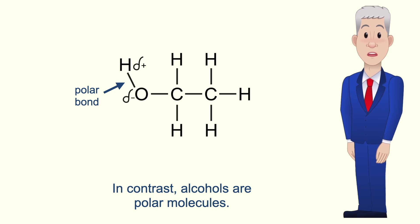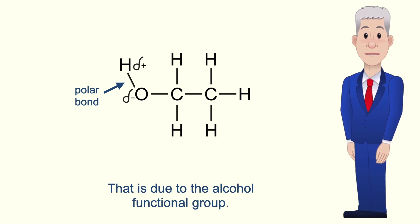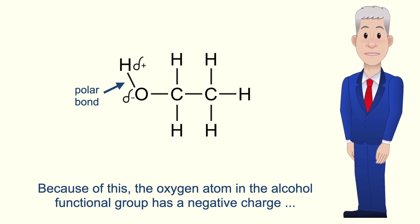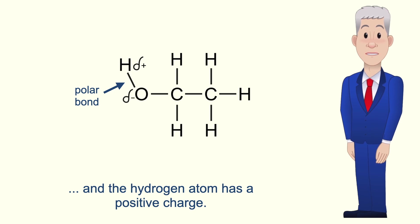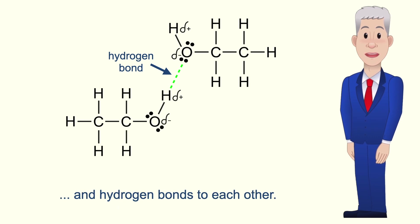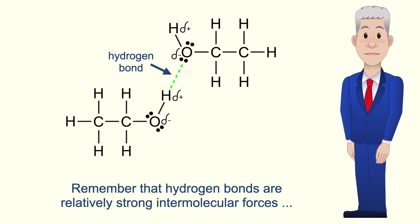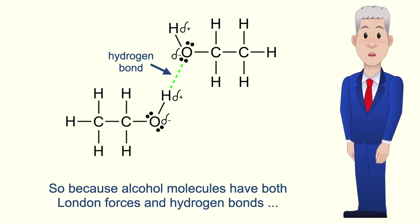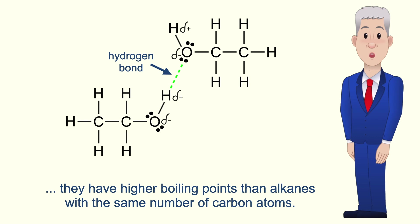In contrast, alcohols are polar molecules, and that's due to the alcohol functional group. Oxygen atoms are much more electronegative than hydrogen atoms. Because of this, the oxygen atom in the alcohol functional group has a negative charge and the hydrogen atom has a positive charge. This means that alcohol molecules can form both London forces and hydrogen bonds to each other. Hydrogen bonds are relatively strong intermolecular forces requiring a relatively large amount of energy to break. So because alcohol molecules have both London forces and hydrogen bonds, they have higher boiling points than alkanes with the same number of carbon atoms.